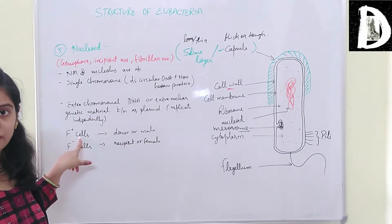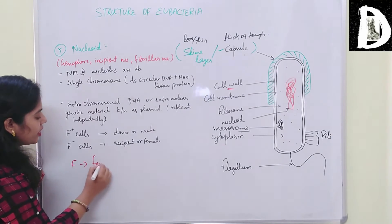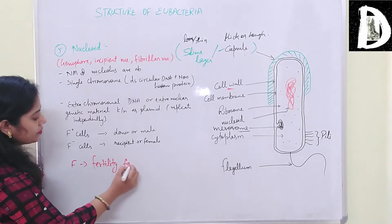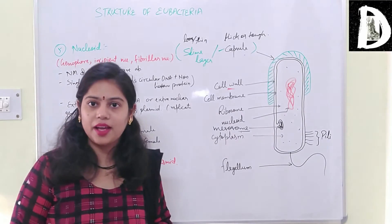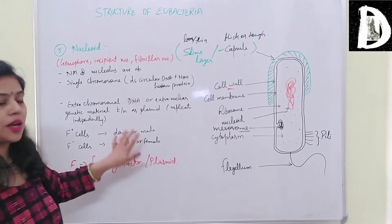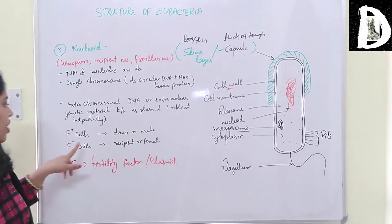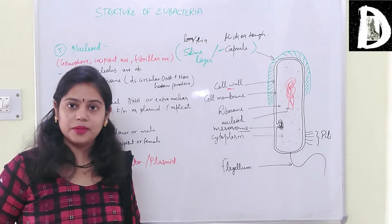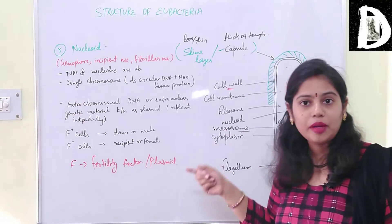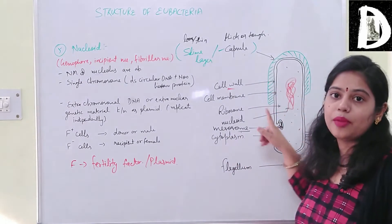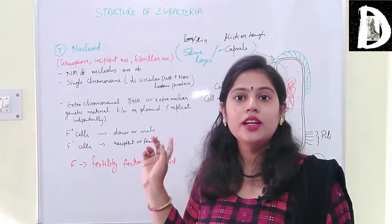Based on the presence or absence of plasmid, bacteria are divided into two types: F plus cells or F plus bacteria, and F negative bacteria. The F here stands for fertility factor. F plus cells have the plasmid present and act as donor - essentially as male bacterial cells. The nucleoid is attached to the central mesosome, which helps in replication and cell division.